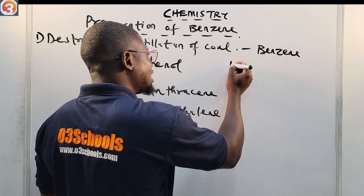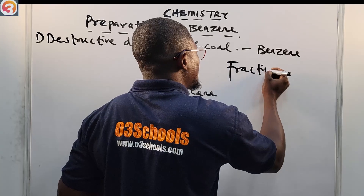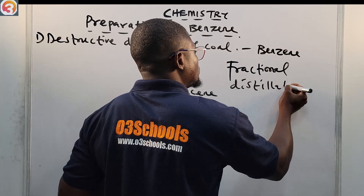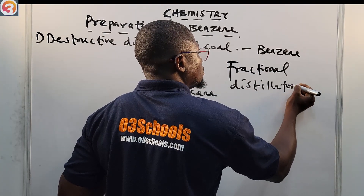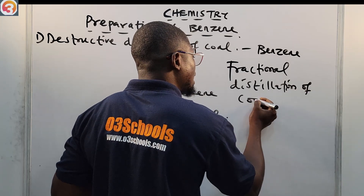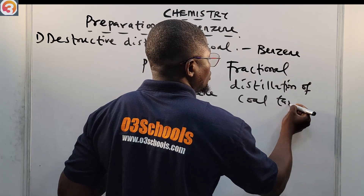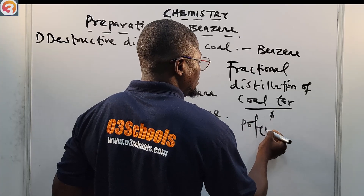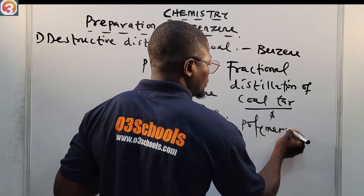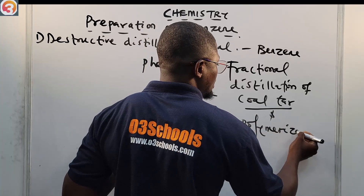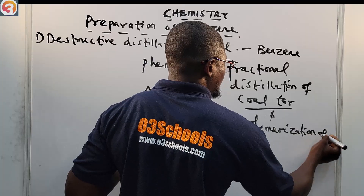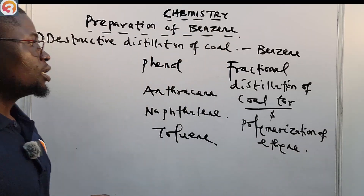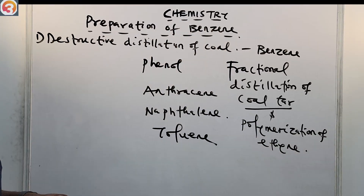So the first method of preparing benzene is destructive distillation of coal, followed by fractional distillation of coal tar, and of course the polymerization of ethyne.